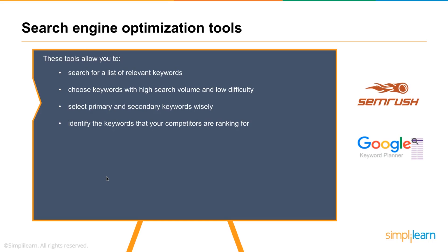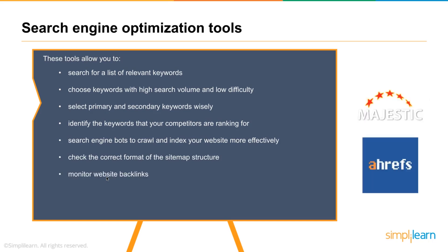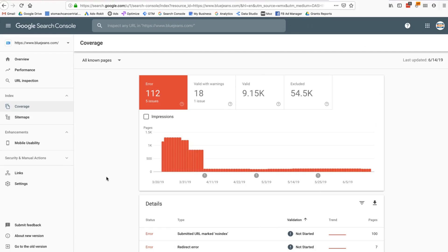Beyond keyword research, other reasons to use SEO tools include understanding how search engines crawl and index your site, checking the correct format of the sitemap, monitoring backlinks, analyzing links to your web pages — identifying good versus bad ones — and performing competitor analysis. Tools available for this include Majestic, Ahrefs, and Moz.